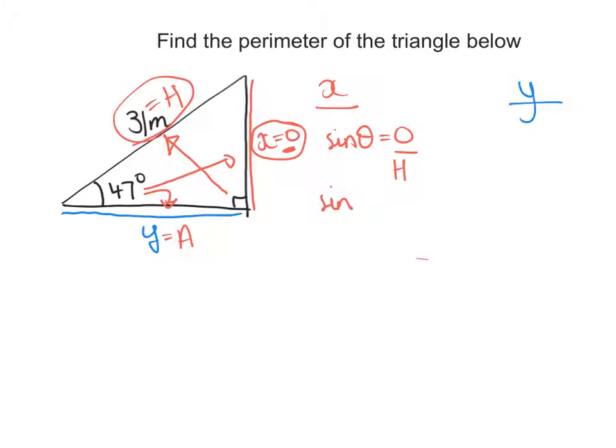Sine of 47 equals the opposite side I called x, divided by the hypotenuse which is 31. Now I need to get rid of this divided by 31, so I'll multiply by 31 on both sides. Now I've done the same thing to both sides. That keeps the equation balanced. And divided by 31 times by 31, they cancel. And then there's x. Now 31 times by sine of 47. I guess I can work that out, but I might just leave it the way it is. I'll explain why in a second.